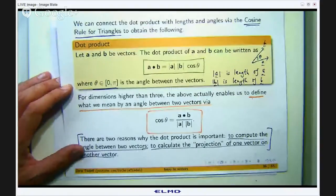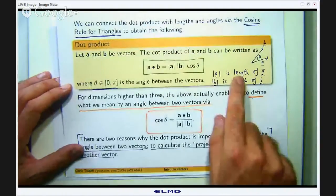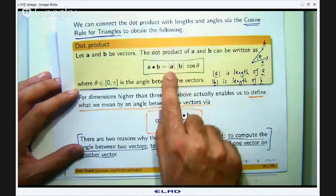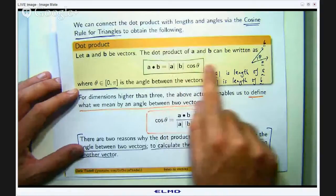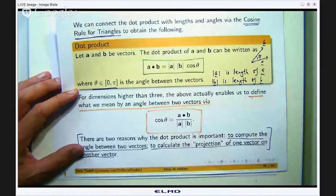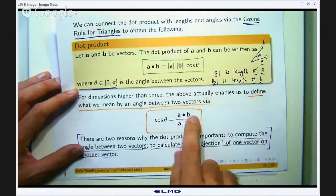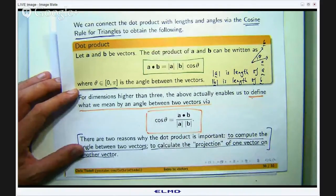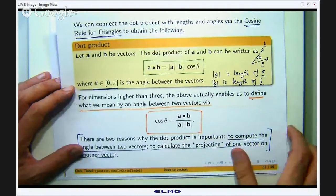And we also could relate the dot product with the product of lengths of vectors and the cosine of the angle between those vectors. So this is the relationship between the dot product, lengths and angle between the vectors.